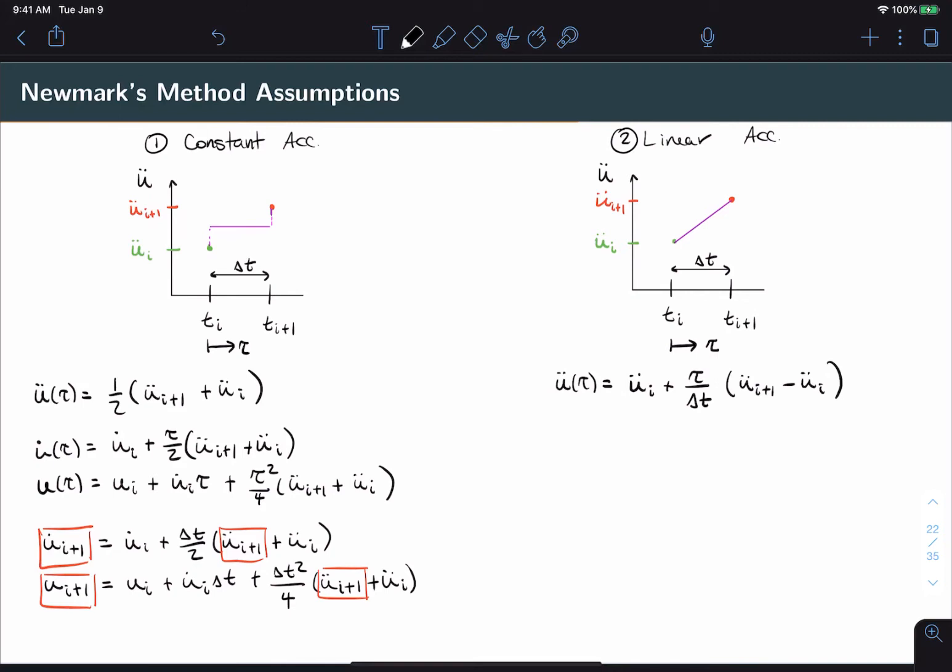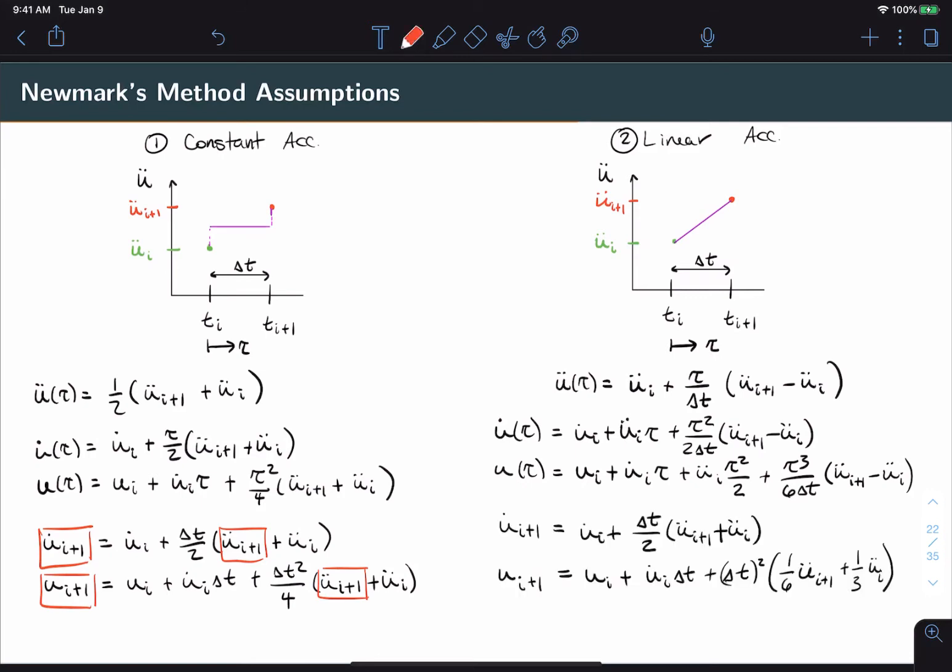But then the process is the same. First, we integrate twice and we get the equations shown here in terms of tau. And then again, we plug in tau equal to delta t. Notice again that we have the same quantity of unknowns here.